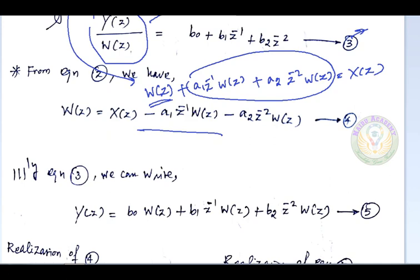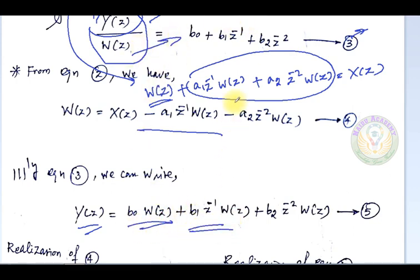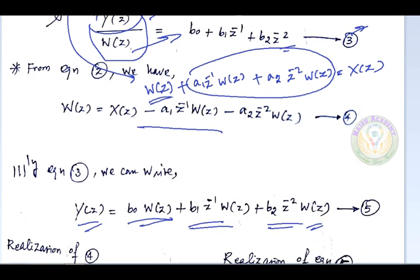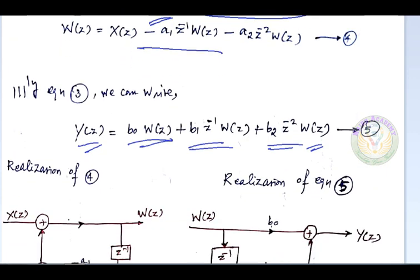Next, cross-multiplying equation 3 gives the numerator relationship. The result involves terms with z⁻¹ and z⁻² applied to W(z), plus coefficient b2·z⁻²·W(z). Now we are going to realize equations 4 and 5 using block diagram components.